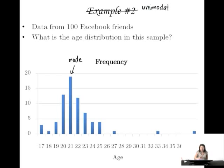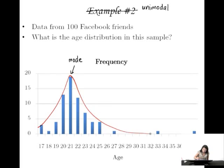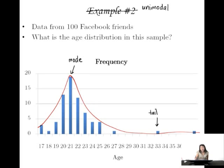Not only that, but this shape is what we call skewed. If I draw a light sketch over this, we see it has a long tail going out towards the right side, the larger values. Because it's skewed and the tail is to the right, we call it skewed right. So it's not only unimodal, but it's also skewed right.